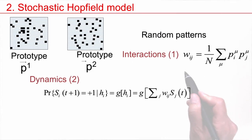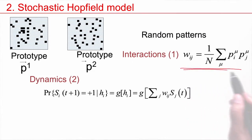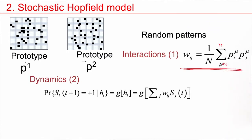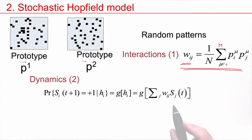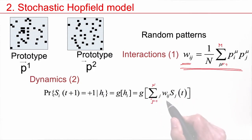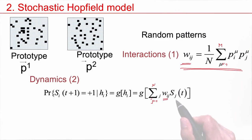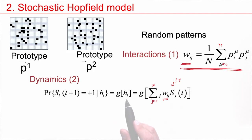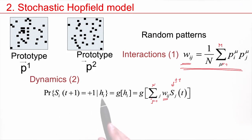As before, we have our interactions. We have stored random patterns — prototypes P1, P2, P3, maybe a total of M prototypes — and these prototypes are represented in the interaction matrix W_IJ. I sum over all neurons J, equal to 1 over N, taking these prototypes in the form of the interaction matrix, and sum with the momentary state S_J, where S_J is plus or minus 1. This gives the total input. But now the difference is, it's no longer just a deterministic sign function. Now we have a probability that the next state is plus 1, which depends on this total input.